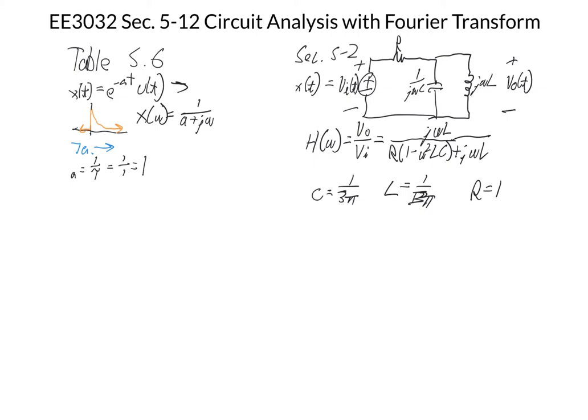So what we do at this point to find the output is we say that Y(ω) is equal to H(ω) times X(ω). This is the continuous frequency of what we were doing for discrete phasors in the Fourier series in section 5-5 and earlier in the chapter.